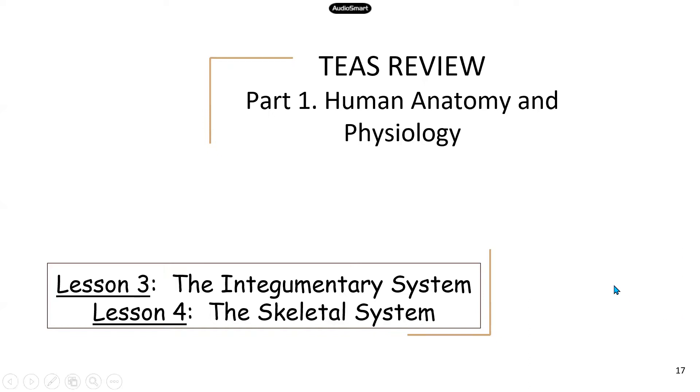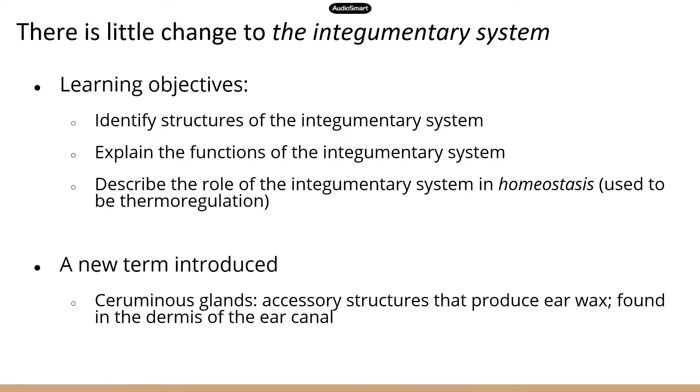Now let's look at the integumentary system first. Like I said, there's very little change. So the learning objectives are still these three: identify the structures in the system, know the functions for the structures and of course the functions for the system overall as a whole, and also describe the role of the integumentary system in homeostasis, basically how the integumentary system contributes to the body's regulation of temperature.